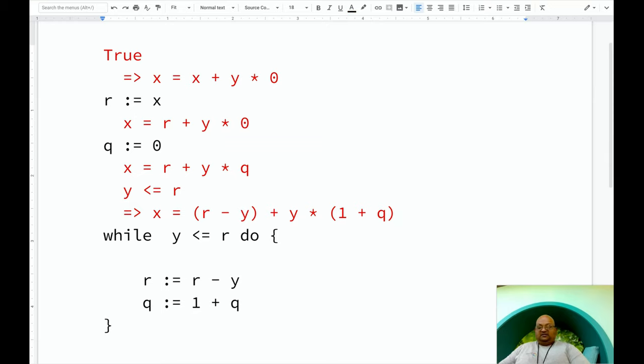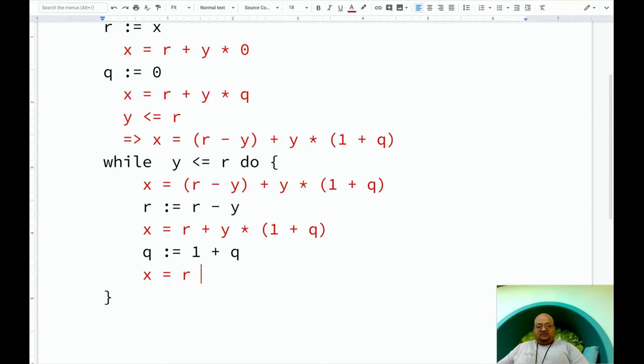Alright, so we have this as a precondition just before going into the while loop. Let's start looking at the statements inside the while loop. We can take this expression over as the precondition for this assignment statement. And then using the axiom of assignment, we get a postcondition, which is x equals R plus y times 1, 1 plus q. And the way we got that was simply by substituting R minus y by R, which is what the axiom of assignment gives us. And if we apply the axiom of assignment one more time to this last assignment, what we get is x equals R plus y times q, which we get by substituting 1 plus q by q in the precondition for this assignment.